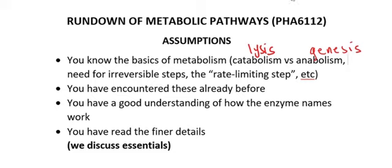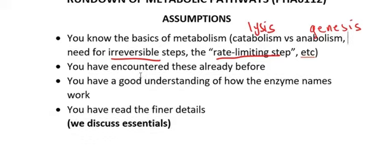The need for irreversible steps: if there is no irreversible step in a pathway, then the pathway is called futile — it's useless. So in order to have some kind of direction, you should have at least one irreversible step. The rate-limiting step is a step in a pathway that determines how fast the entire pathway will be. If the rate-limiting step enzyme is activated, expect the pathway to be fast; if it is stopped, the pathway will slow down.